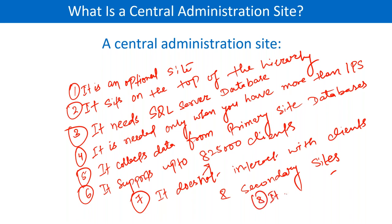The CAS does not interact with clients directly, and it does not interact with secondary sites. It only manages primary sites. It does not define policy, does not initiate deployment — it is just for inventory purposes at the top of the hierarchy.